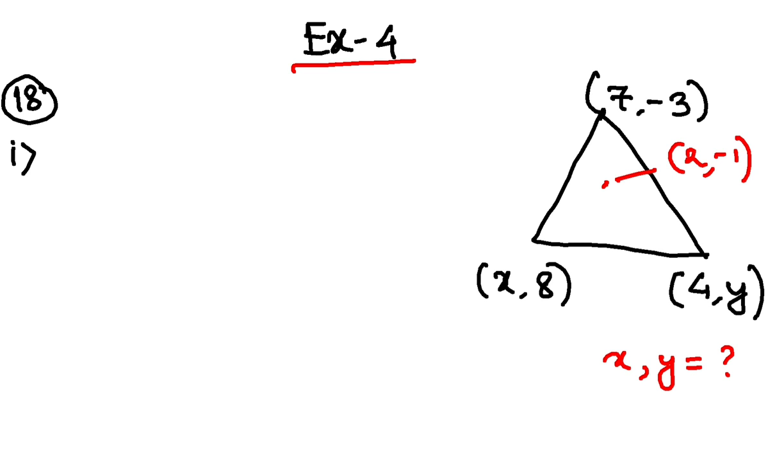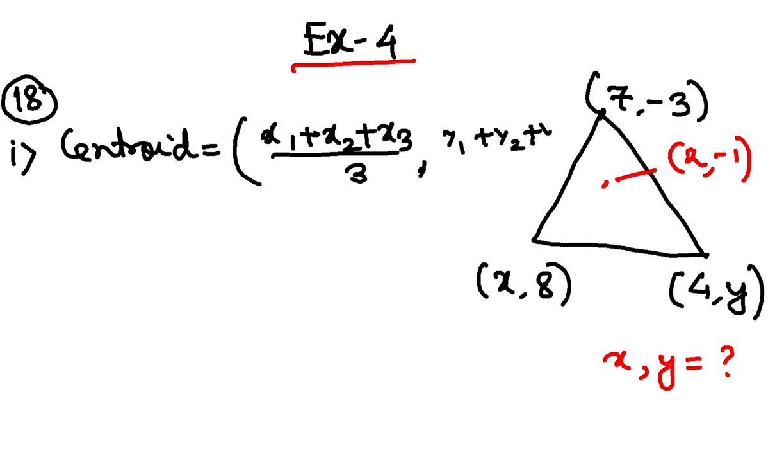So, what do you know? We know that the centroid, how do you calculate centroid? Centroid of a triangle is x1 plus x2 plus x3 by 3 and y coordinate is y1 plus y2 plus y3 by 3. Now, in this question, centroid is already given: 2 comma minus 1.